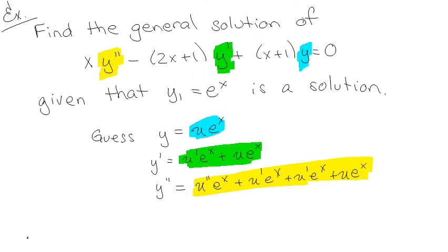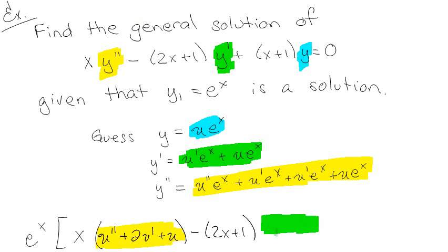Alright, so I'm actually going to start by pulling an e^x out front. I'll have e^x times x times the yellow stuff, which is going to be u'' + 2u' + u, and then minus (2x+1) times the green stuff.